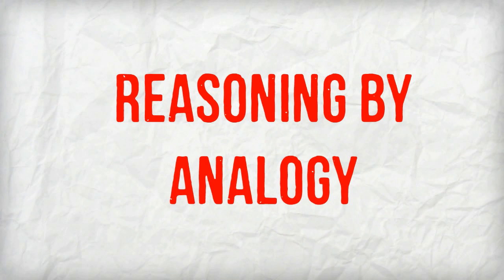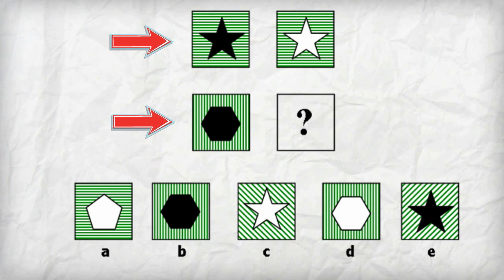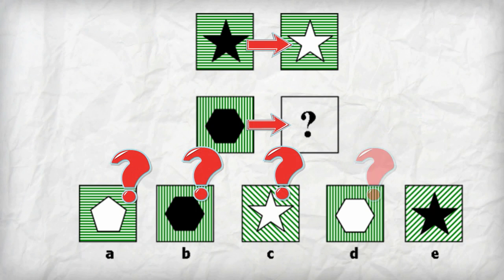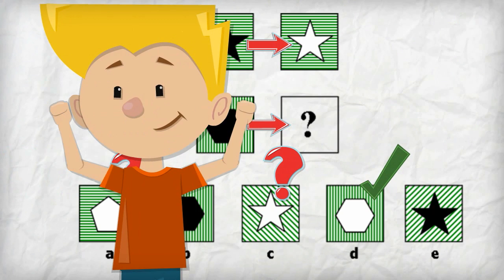In a reasoning by analogy exercise, the child will see two or three rows of objects in a set of boxes. It is the child's job to determine the relationship between the objects as they move across the rows and down the columns. In this example, the black star changes into a white star when it moves across the row. By applying the same relationship to the second row, we recognize that the black hexagon must change into a white hexagon. So answer choice D is the correct answer.